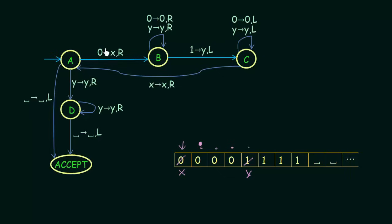Back in state A, if you see a zero again, the whole process continues. That zero is replaced with X, then we move right and replace the next one with Y, then we move left replacing the next zero with X, then move right replacing the next one with Y, then move left replacing the last zero with X, then move right replacing the last one with Y.